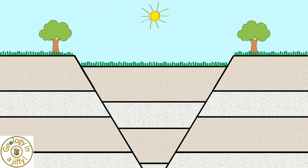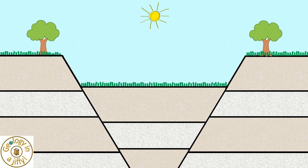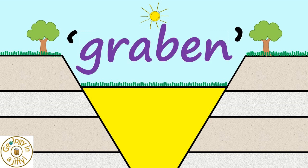Our rifted rock could then be further stretched, resulting in the central block also moving further downwards. This dropped central block is known as a graben.